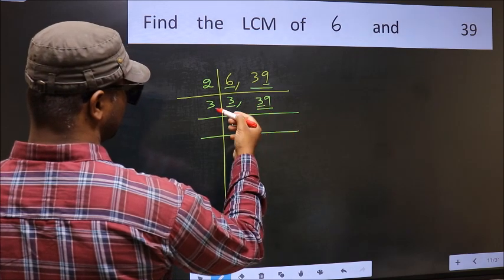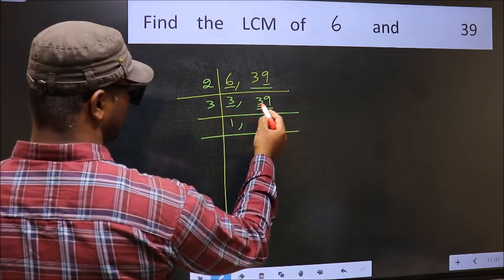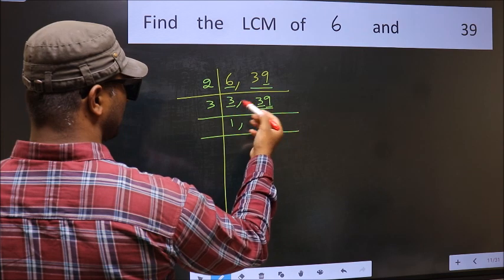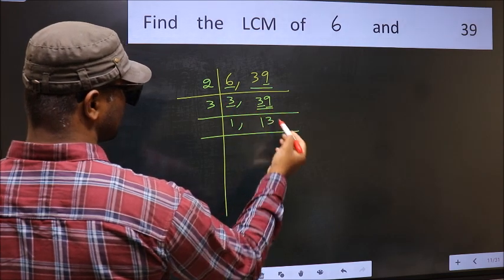First number 3. When do we get 3 in the 3 table? 3 times 1 is 3. The other number, when do we get it in the 3 table? 3 times 3 is 9.